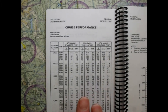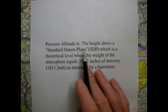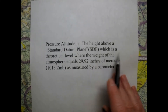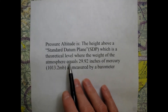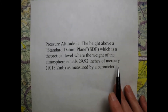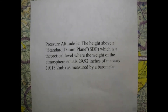Before we get started with the calculations, I want to go over exactly what pressure altitude is. The official technical definition of pressure altitude is the height above a standard datum plane (SDP), which is a theoretical level where the weight of the atmosphere is equal to 29.92 inches of mercury or 1013.2 millibars as measured by a barometer.